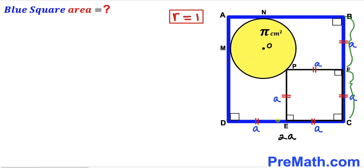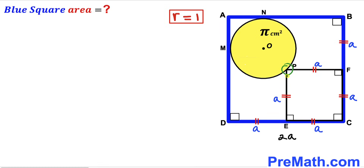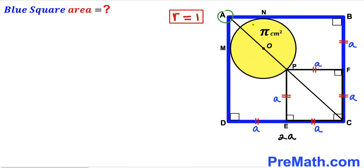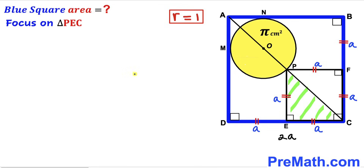Making an observation, since these segments are equal and likewise these segments are equal, we conclude that point O is at the center of the big blue square ABCD. In the next step, I've connected vertices A and C so that all these points are collinear on this diagonal.